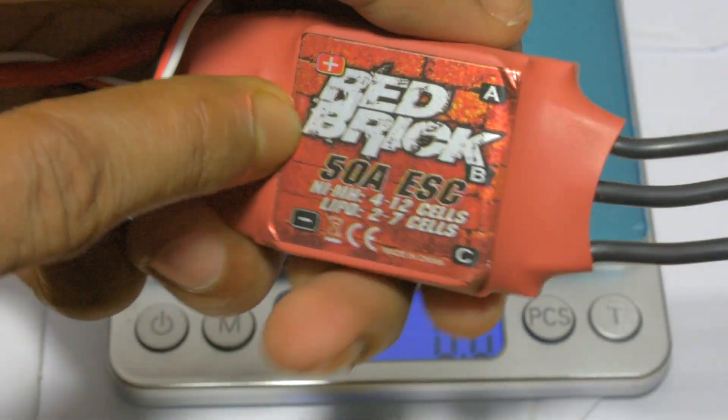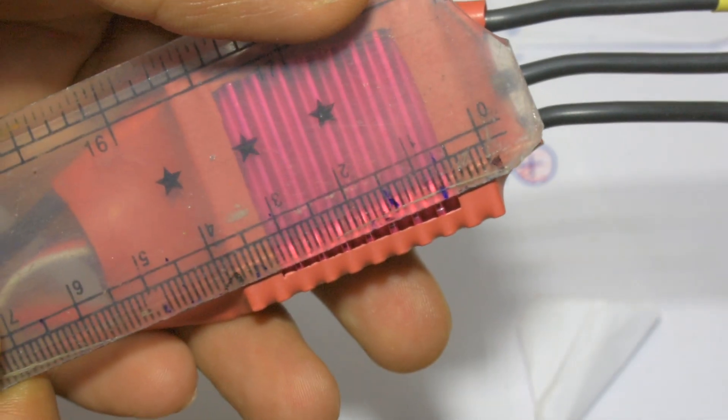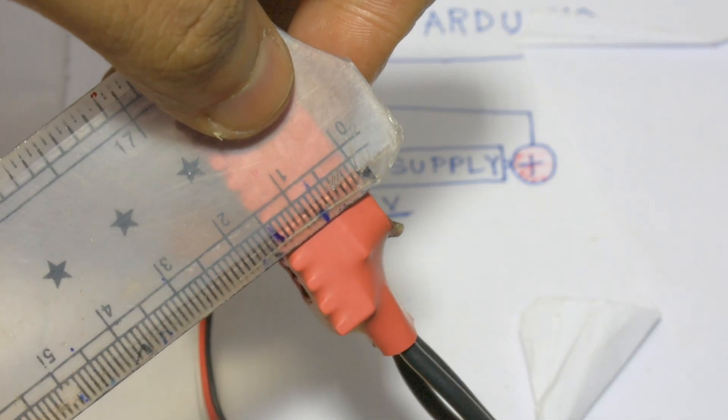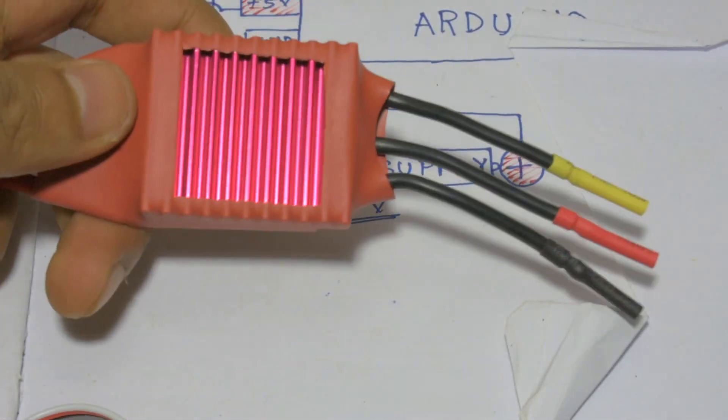Now let's measure its dimensions. Its length is 4 centimeters, width is 3.5 centimeters, and thickness is 1.5 centimeters. Dimension-wise it's not a very big ESC, but it's a little bit heavy. I can say it's the best ESC you can get because of its performance.